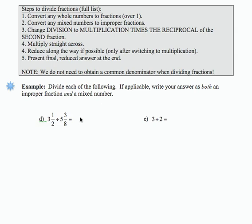So the first one, 3 and 1 half, becomes 7 over 2. The second one, 5 and 3 eighths, becomes 43 over 8. But it's very important to realize that we're still dividing. We haven't done anything with the reciprocal of the second fraction.